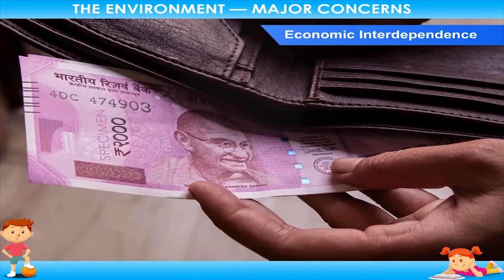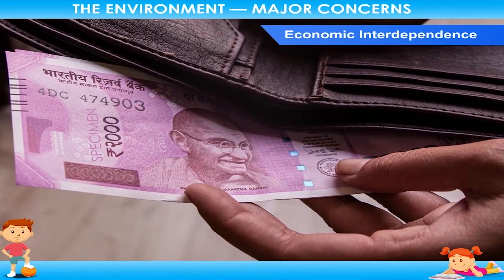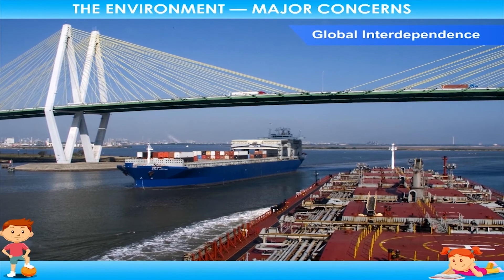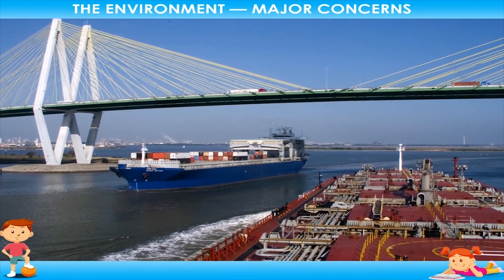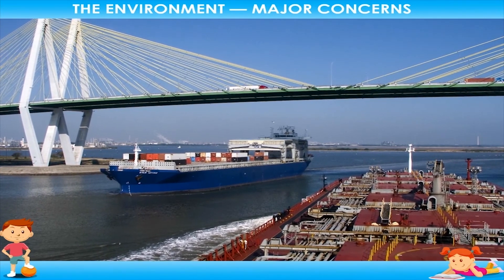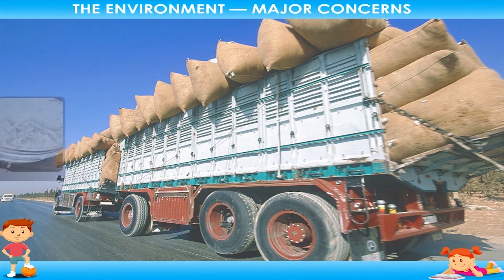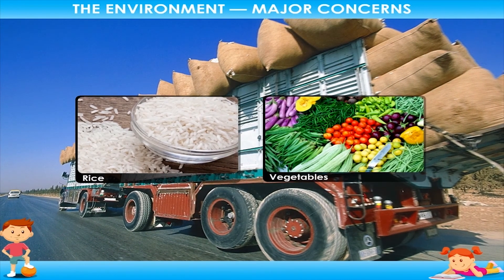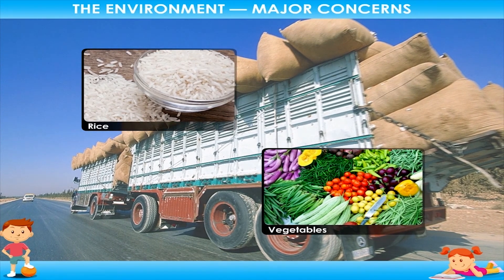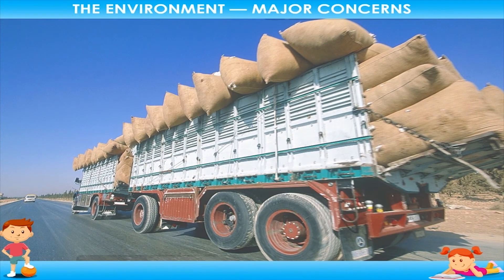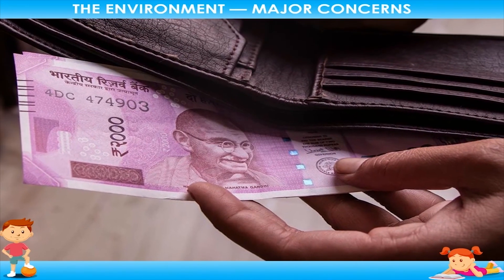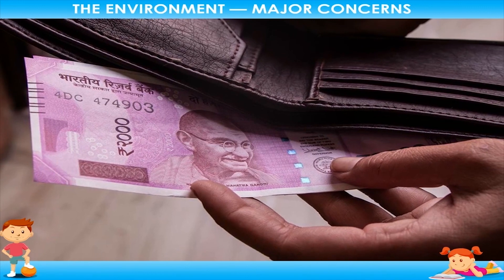Global interdependence: Different nations in the world also depend on one another for benefit. For example, our country transports rice, vegetables, and various other things to other parts of the country where there is no production of these goods. This interdependence benefits each other — our country generates money by exporting materials to other parts of the country.